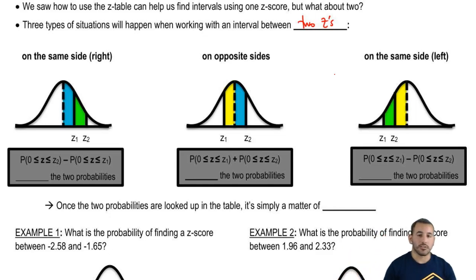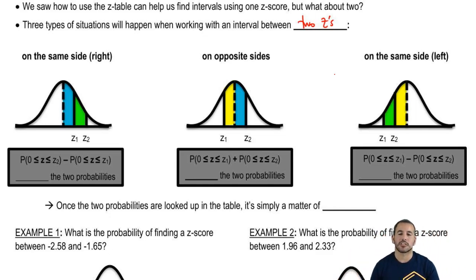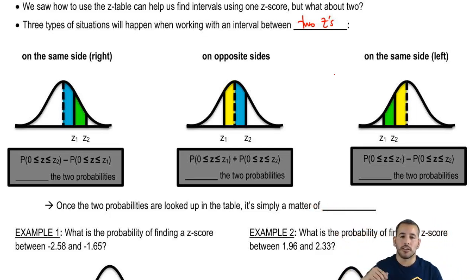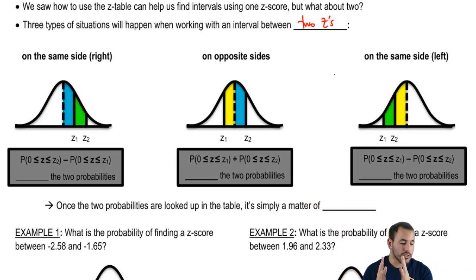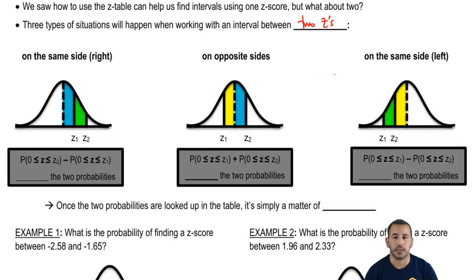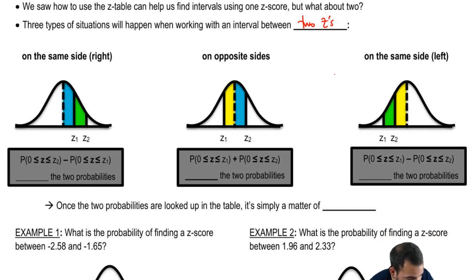Does that make sense? We've seen these concepts and applied this before — it's just bringing it back now to using the z-table. So what we do is the probability from zero to z2, the bigger one, minus the probability from zero to z1, the smaller one. So we're left over with that little chunk. All you do is subtract the two probabilities.